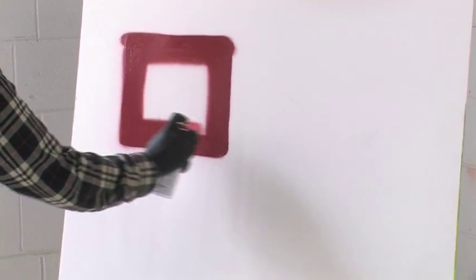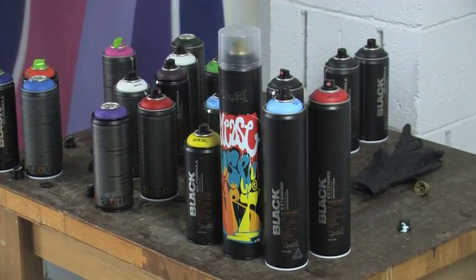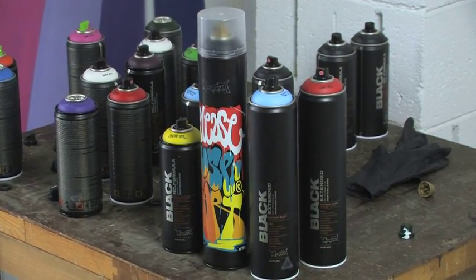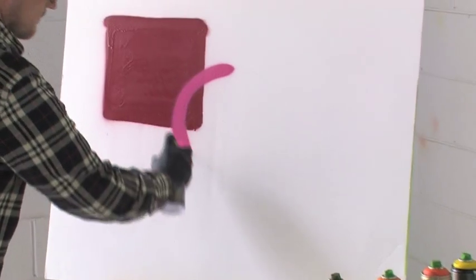The Montana black line is an artist grade nitro combination based paint. Its high pressure valve system makes it ideal for painting large surfaces such as walls or murals, but it still allows for fine detail work.